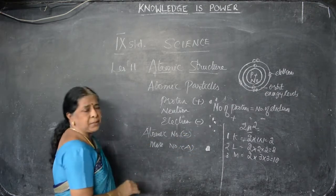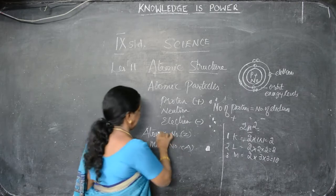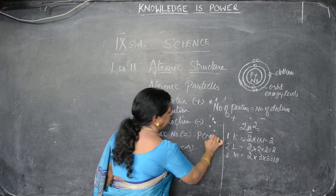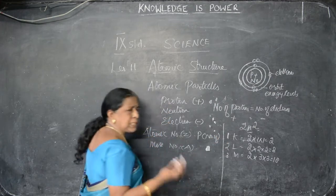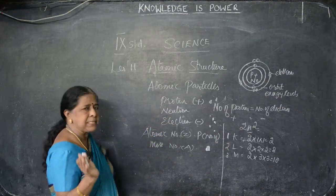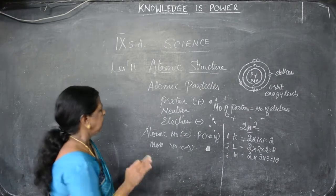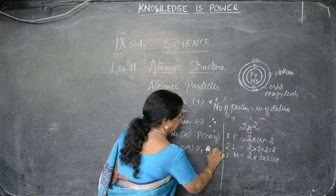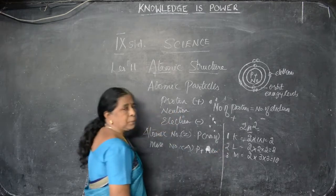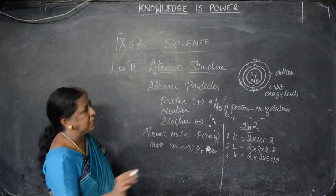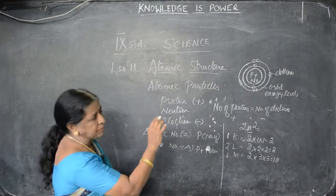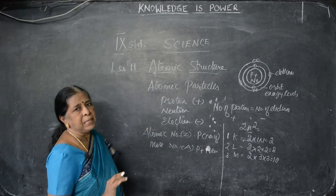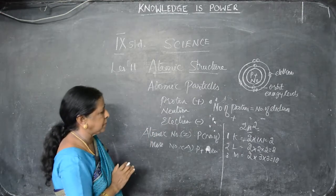How can we find out the atomic number and mass number? Atomic number is the number of protons — only number of protons, do not confuse yourself. Mass number is the number of protons plus neutrons. In short, the weight of the nucleus is the mass number of the atom.